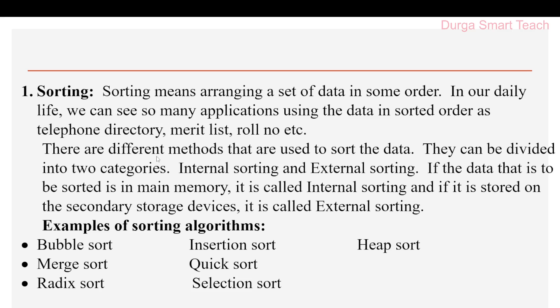Sorting methods are divided into two categories: internal sorting and external sorting. Internal sorting is when the data is stored in main memory. External sorting is when data is stored in secondary storage devices like pen drives and hard disk.